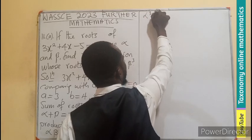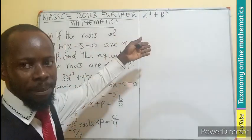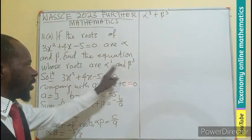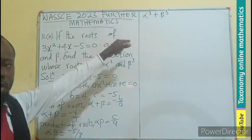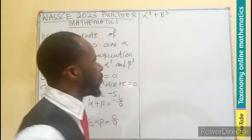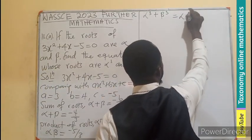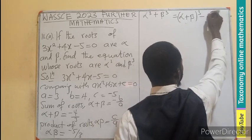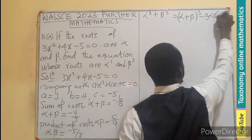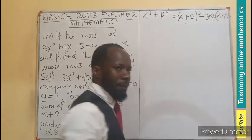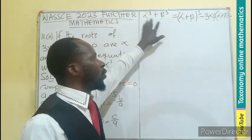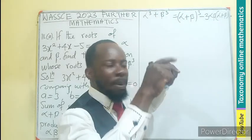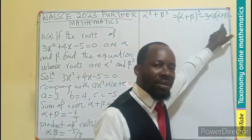So for us to be able to generate another equation in this form using the cube of the α and β, we also need to know the relationship between the cube of roots. As in, α³ + β³, that is going to be the new sum because this and this is what we are adding to find the sum. Then we multiply them to find their product. So this becomes the new sum.